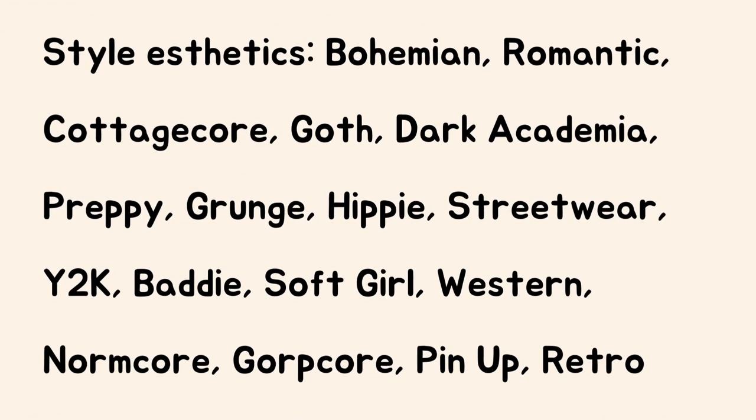Let's talk about style aesthetics as another keyword category. There are so many: bohemian, romantic, cottagecore, goth, dark academia, preppy, grunge, hippie, streetwear, Y2K, soft girl — which is new and big right now — western, normcore, gorpcore, pinup, retro, and hundreds more. Try to use the most relevant ones that are currently trending or are classic style aesthetics people look up often, such as romantic, bohemian, goth, and western.